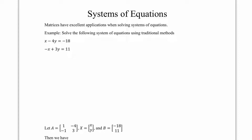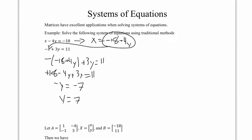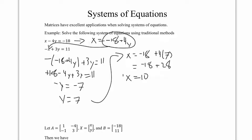We're going to use substitution. We rewrite the first equation as x equals negative 18 plus 4y, then plug it in for x. That gives negative 18 plus 4y plus 3y equals 11, which simplifies to negative y equals negative 7, so y equals 7. Substituting back, x equals negative 18 plus 4 times 7, giving x equals 10. So our solution is x equals 10 and y equals 7.